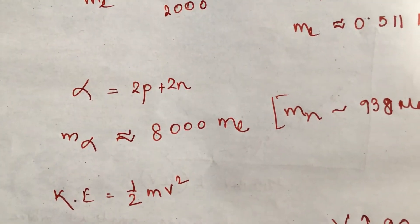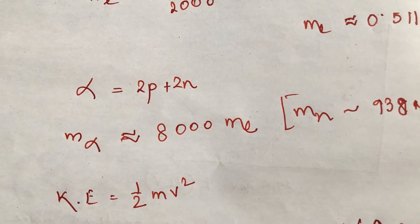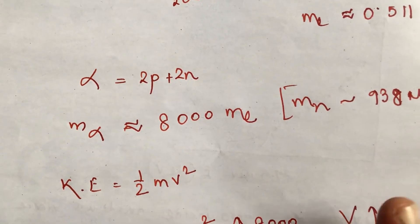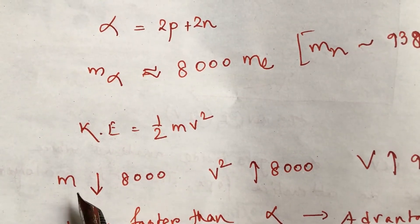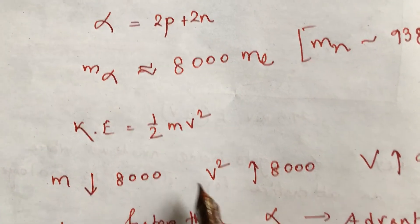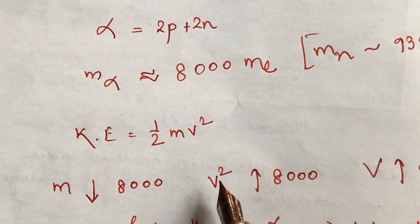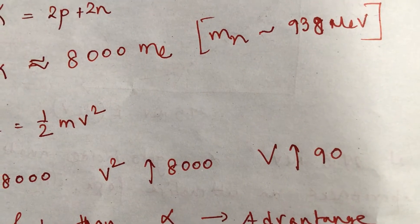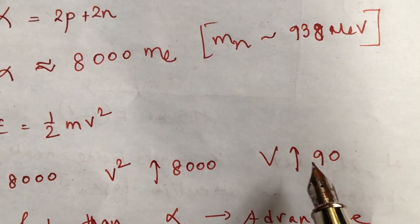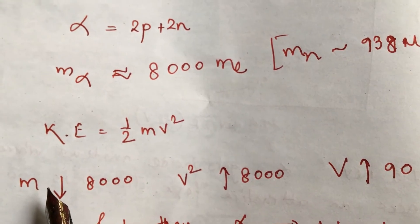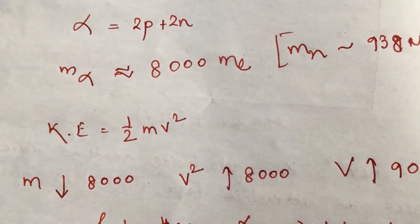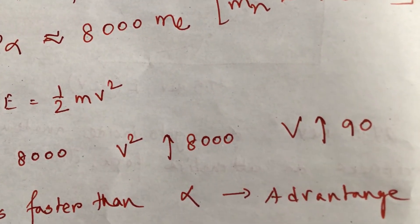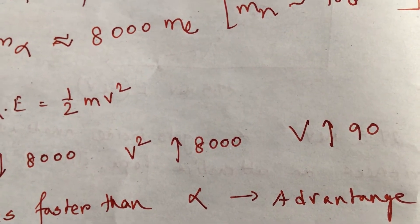And we know that kinetic energy is nothing but half m v square. If we want to have the same amount of kinetic energy and if the mass is smaller by eight thousand times, we will get eight thousand times bigger over v square, which means the velocity v is almost 90 times greater than in case of alpha particles. So if we employ electrons as our projectile, we will have 90 times greater velocity than we can achieve for alpha particle.